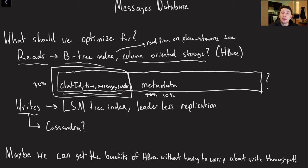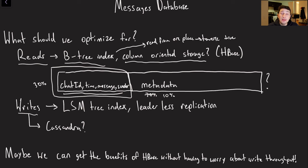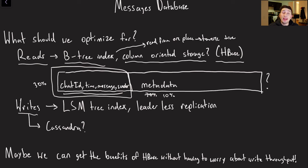Column-oriented storage could actually help overall because big social media sites include as much metadata as possible with every message — they do a lot of post-processing for data analytics. For that reason, I'm actually going to deviate from my original Messenger design where I recommended Cassandra, and agree with the Grokking the System Design Interview approach that we can probably get away with using HBase.